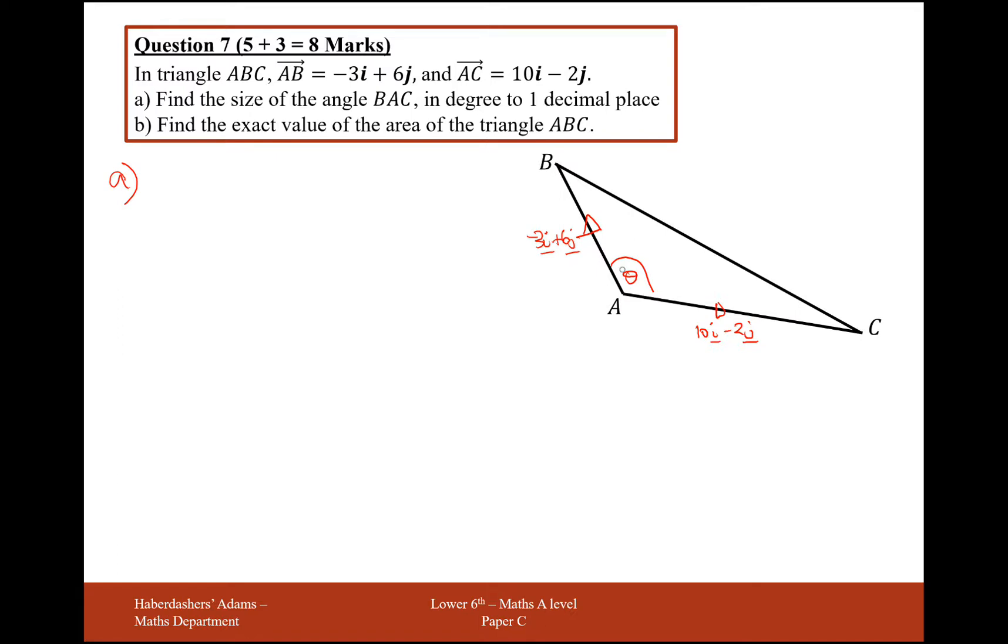So what I'm thinking here is if I'm looking to find this angle, I could potentially work out this side length here, this side length here, and the vector and hence the side length there as well. So I'm going to need all three side lengths.